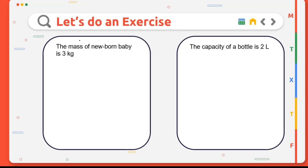Now let's do an exercise together. Question number 1: The mass of a newborn baby is 3 kg. Is it true or false? This is a true statement because kilograms shows unit measurement of mass. Converting from kilograms to grams, we go down three steps, so we multiply by 1000. 3 times 1000 equals 3000 grams.